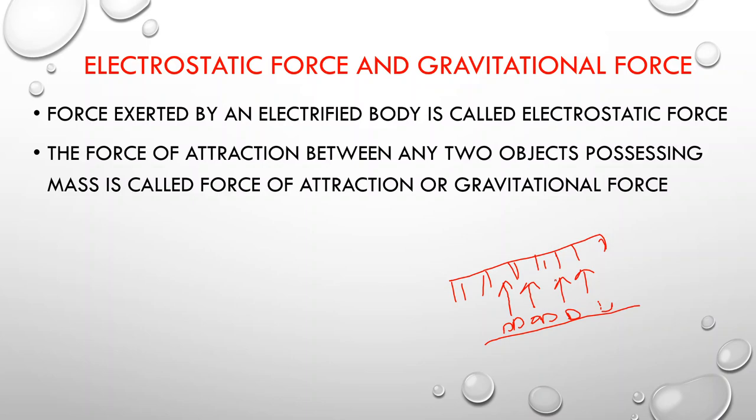Gravitational force exists everywhere in the universe. Our earth has a very huge mass, so because of that mass the earth pulls everything toward itself. Because of this gravitational pull, whatever we throw upward — for example, if we throw a ball upwards, it ultimately comes down. A ripe fruit does not go upward when it falls from the tree; it comes down because of this gravitational force.